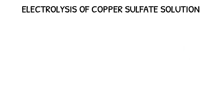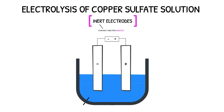We can investigate the products from the electrolysis of copper sulphate solution using both inert and copper electrodes. Let's start by looking at the electrolysis of copper sulphate solution using inert electrodes. Inert electrodes are commonly made from graphite — they are highly unreactive and therefore do not react during the process. The apparatus for this experiment would look something like this: a beaker containing the copper sulphate solution and two graphite electrodes, both connected to a power supply.